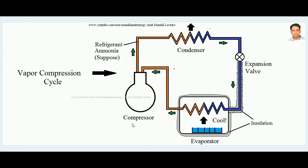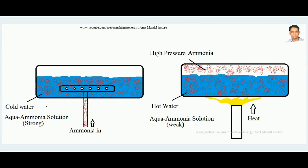In the vapor absorption cycle, the job of the compressor is eliminated. In the aqua ammonia system, ammonia has a property that when it is mixed with cold water it is readily soluble — the affinity of ammonia to dissolve in water when the water is cold is very high. Here I am showing a vessel with cold water where ammonia mixes, forming what is called the aqua ammonia solution.